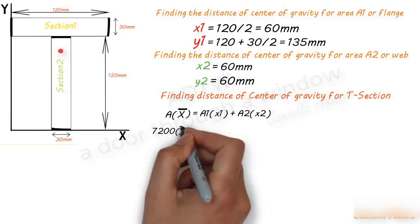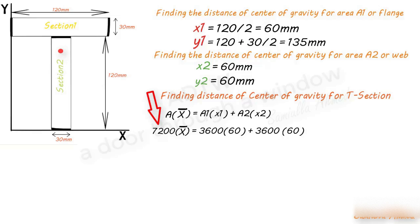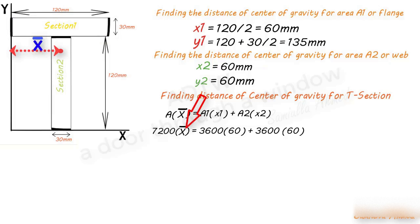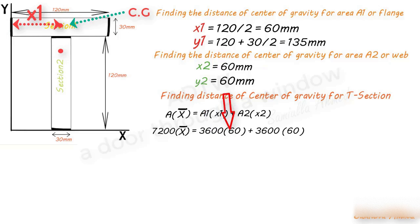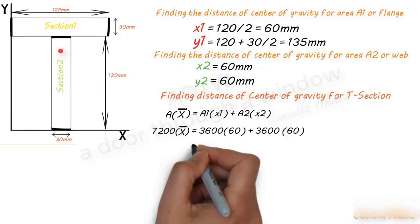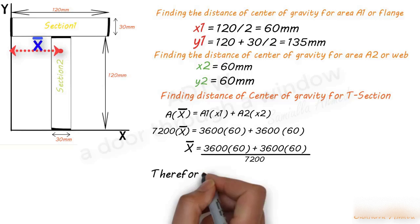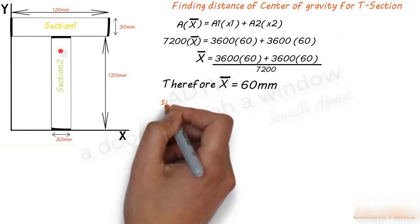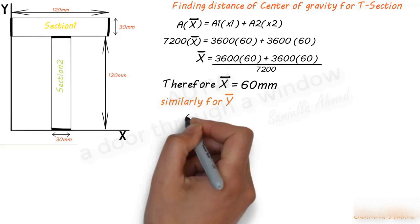Substituting values: 7200 × x̄ = 3600 × 60 + 3600 × 60. After rearranging the equation, we get x̄ = 60 mm. Similarly, for finding ȳ we use the same relationship, where the product of the area of the T-section and its CG distance from the X-axis equals the sum of products of area of Section 1 and its CG distance plus area of Section 2 and its CG distance from the X-axis.